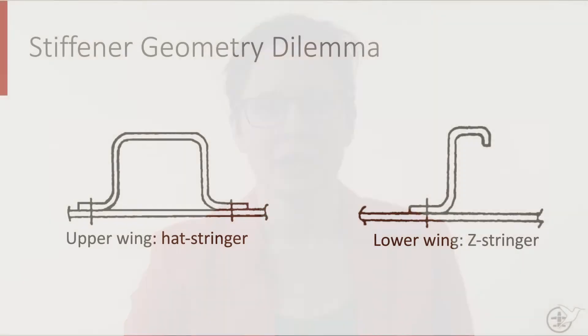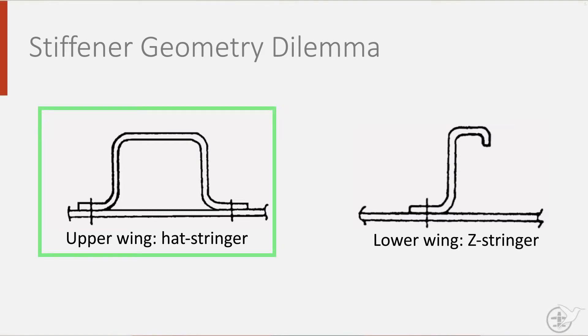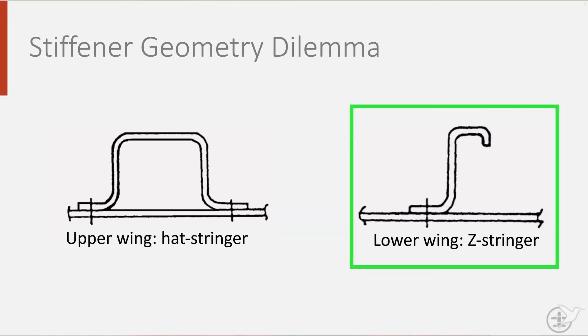Difficult choice, eh? Let me take you through the answers, starting with the upper wing panel. In flight, wings bend upwards, causing compression in the upper side of the wing. This is why, in heavily loaded structures such as the upper wing panels, hat stiffeners are often applied. In structures that carry less compressive loads, L-shaped or Z-shaped stiffeners are used, such as in the lower wing panels. Not only does it use up less material, they are also easier to inspect from all sides than hat stiffeners, but cannot be inspected internally.